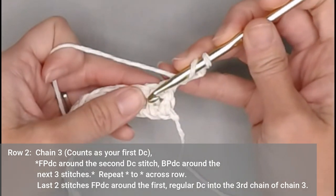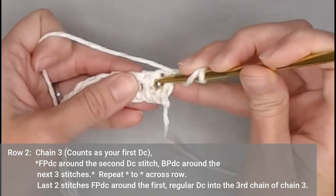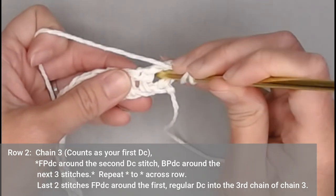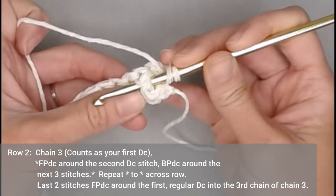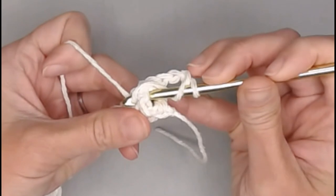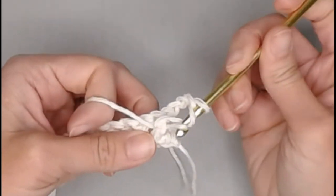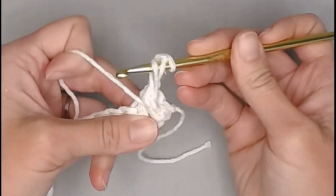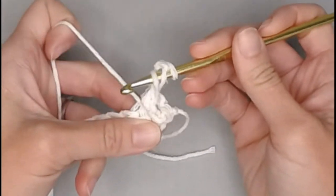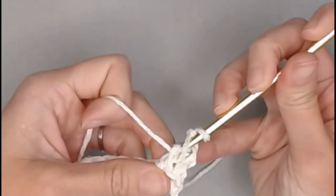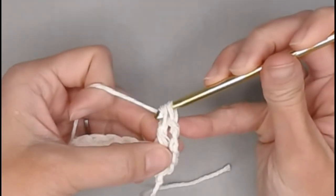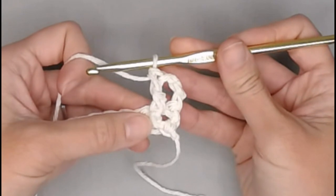So yarn over, insert our crochet hook into the side space of the stitch. Go behind and come out the other side of the stitch. Yarn over, pull that yarn through so it's like flossing behind that stitch. Yarn over, pull through two. Yarn over, pull through two. And that's what we're looking at.